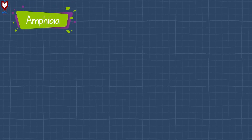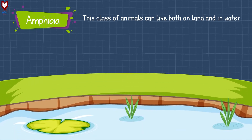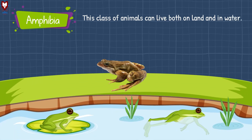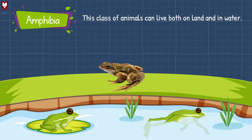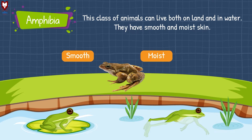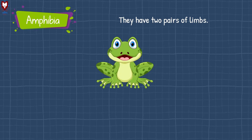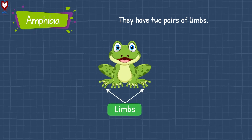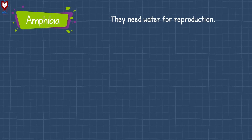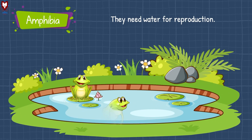The next class is Amphibia. This class of animals can live both on land and in water. They have smooth and moist skin. They have two pairs of limbs. They need water for reproduction.